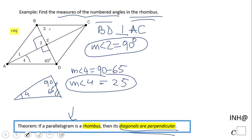Now the measure of angle 1: if this is 25, angle 1 will be 25 also. Why? The diagonal of a rhombus bisects the opposite angles, which means it cuts angle BAC in half and angle BCD in half.